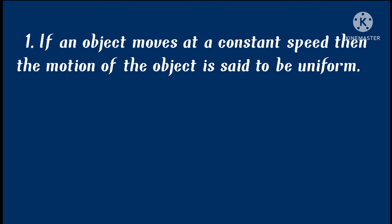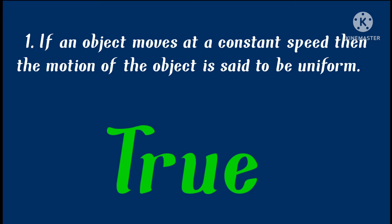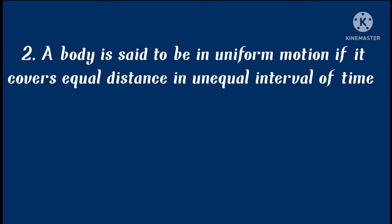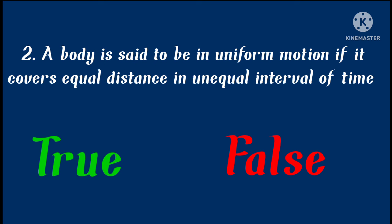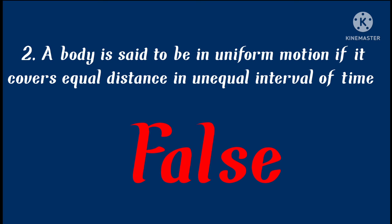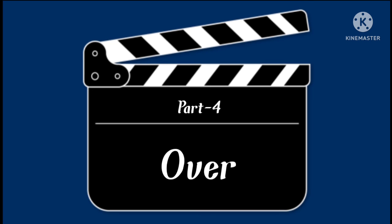Now for some questions. First: if an object moves with constant speed, the motion is said to be uniform — true or false? This is true, as uniform motion means an object traveling equal distances in equal intervals of time. Second: a body is said to be in uniform motion if it covers unequal distance in equal intervals of time — this is false, since we know that uniform motion requires equal distances.